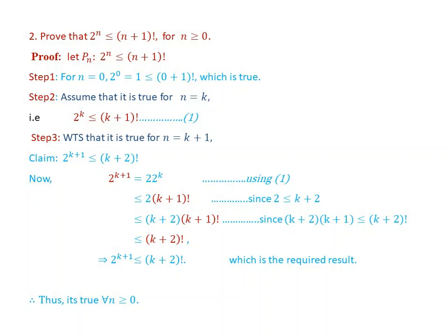To show this, let us start from the left-hand side of our claim. The left-hand side is 2 to the power of k plus 1. Using the exponential rule, this equals 2 times 2 to the power of k. Using equation 1, 2 times 2 to the power of k is less than or equal to 2 times (k+1) factorial. Since 2 is less than or equal to k plus 2, we have 2 times (k+1) factorial is less than or equal to (k+2) times (k+1) factorial.